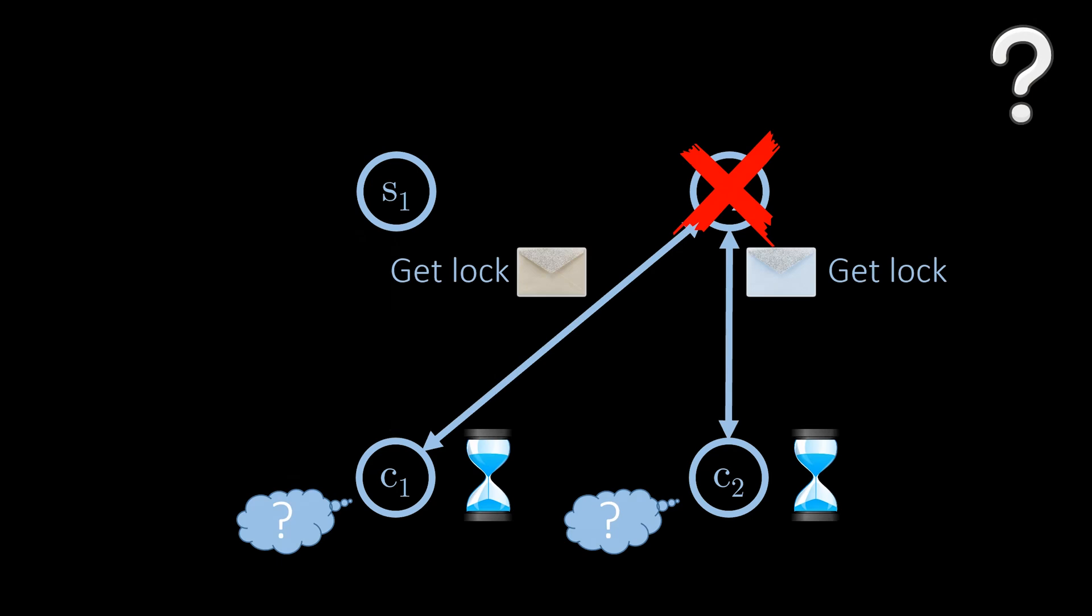What if a server is not reachable? In that case, the whole system does not work because no client can get all the locks. One of the main reasons to use multiple servers to begin with is to improve the reliability of the system, but now, the failure of any single server causes the system to fail.